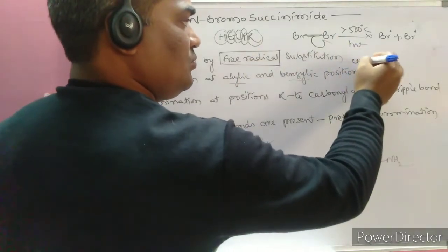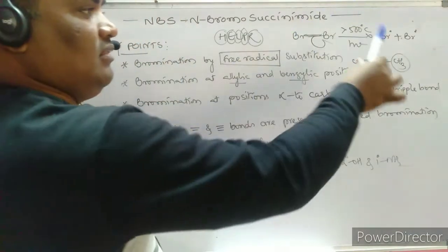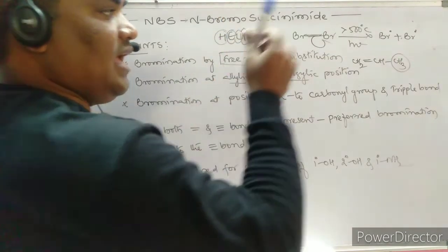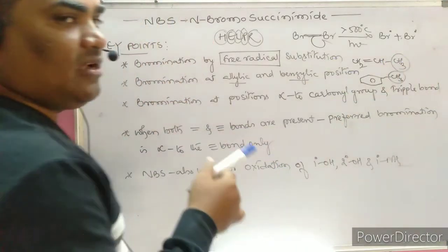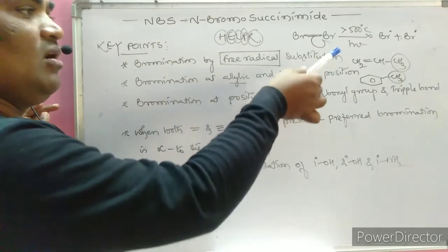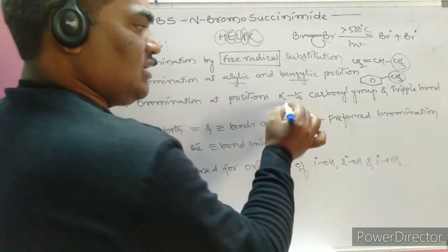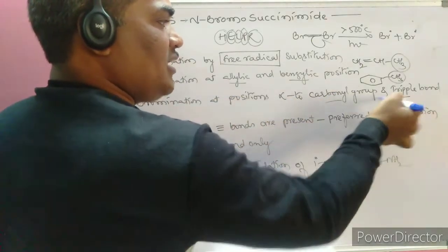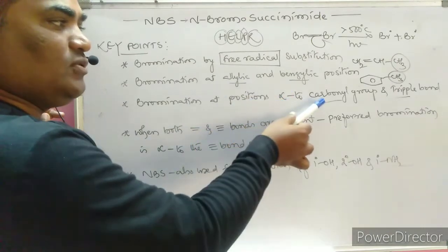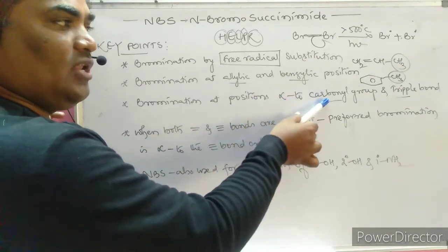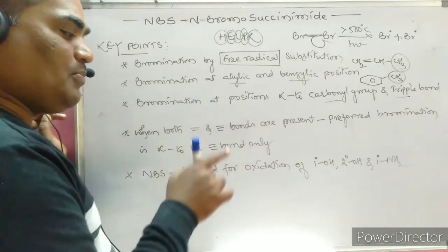In CH2 double bond CH with CH3, the carbon attached to the double bond is the allylic carbon atom; its hydrogen is substituted by bromine when using NBS. For benzene rings, the next carbon atom is the benzyl carbon and its hydrogens are benzyl hydrogens, also substituted by NBS. Additionally, bromination can occur at the alpha carbon to the carbonyl group as well as to a triple bond when allylic and benzylic positions are absent.